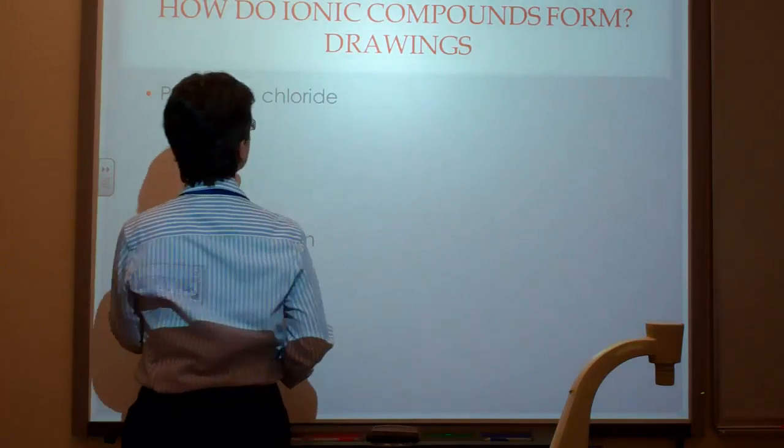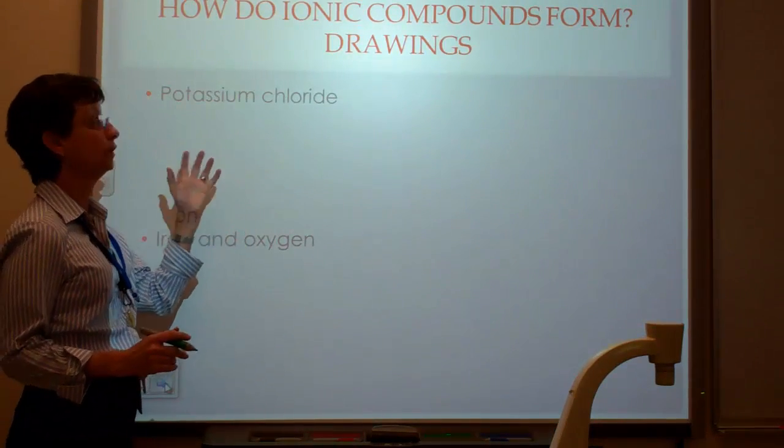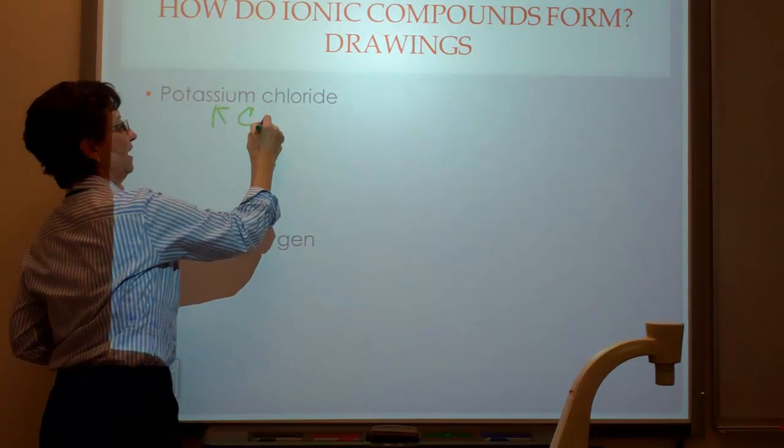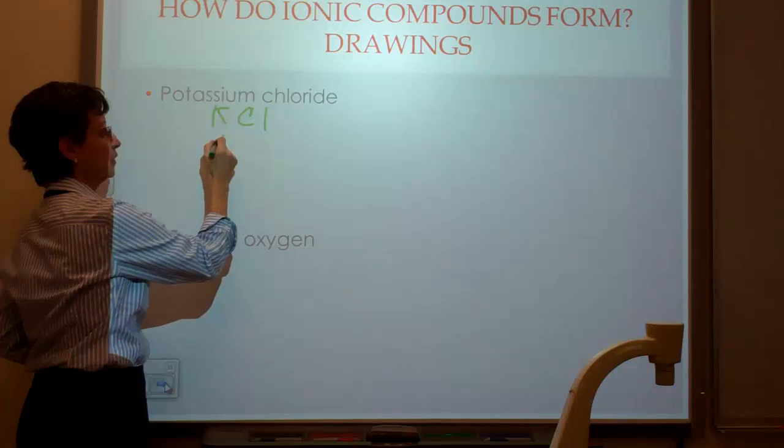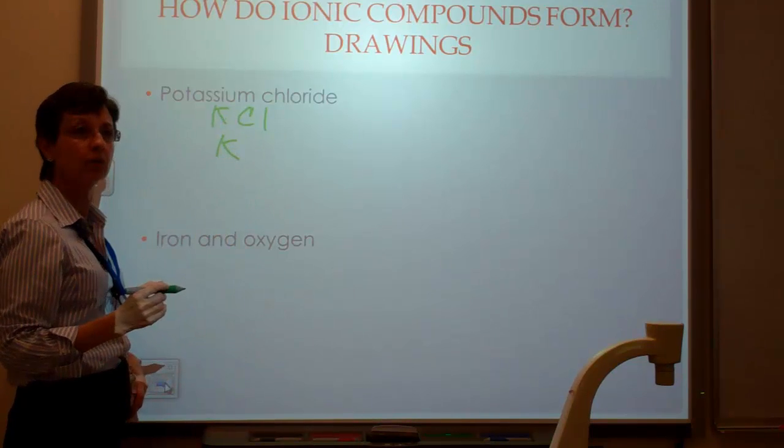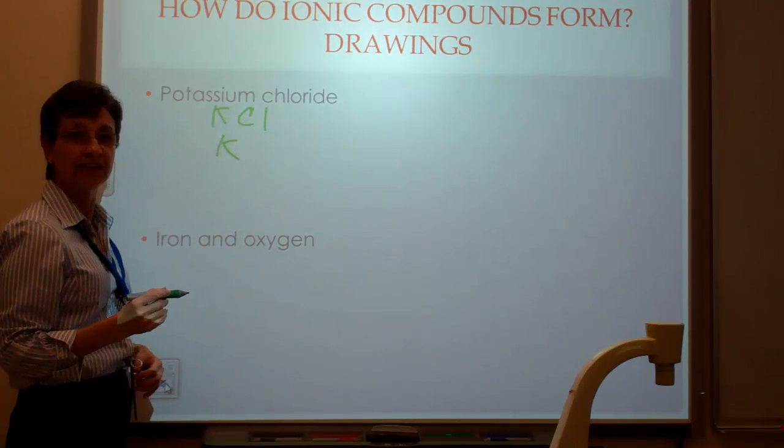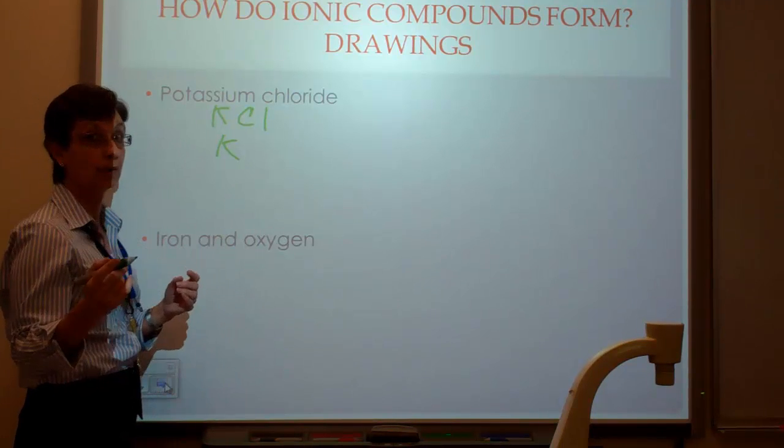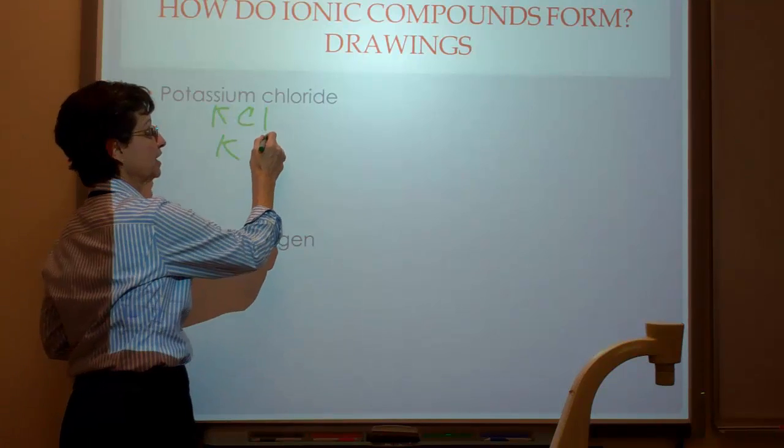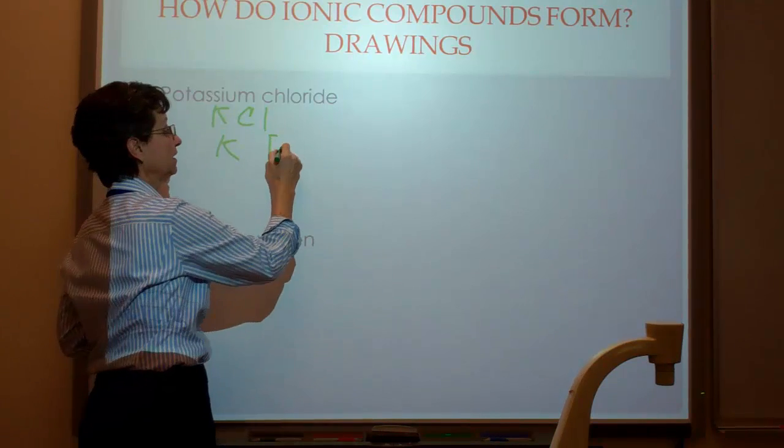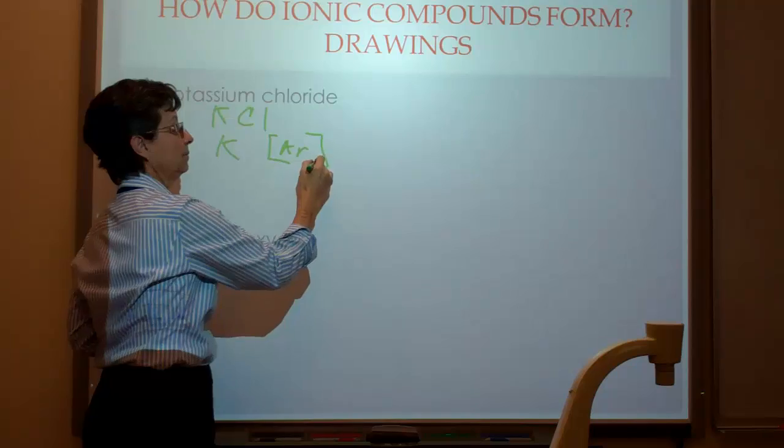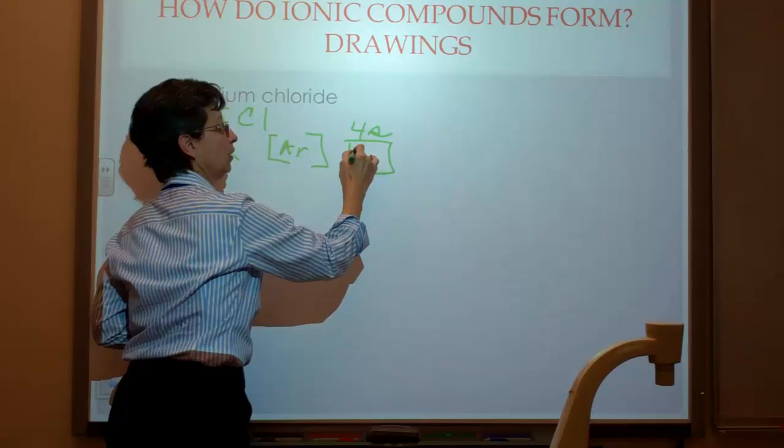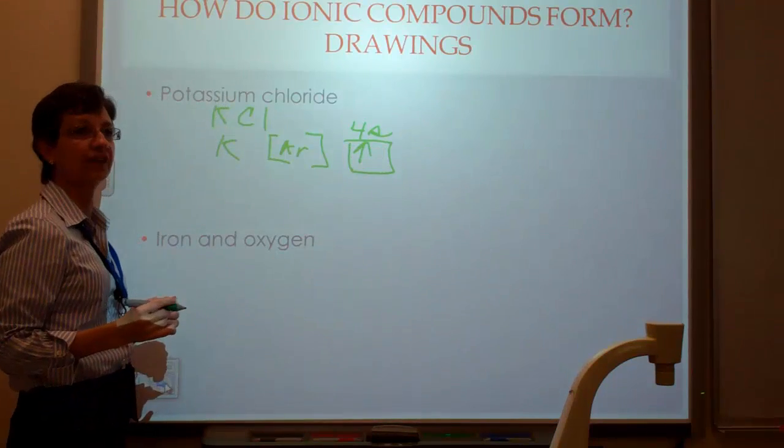First, I'm going to draw the orbital notation for potassium chloride. So, I have KCl, and I'm going to, first of all, write K. I'm going to write the abbreviated orbital notation. So for K, I'm going to write the abbreviated orbital notation using argon-core, Ar, 4s, and there's going to be only one electron there. So, argon-core, 4s1.